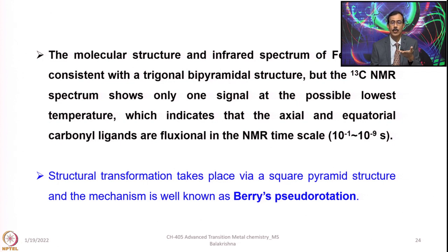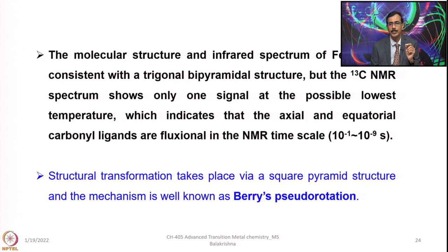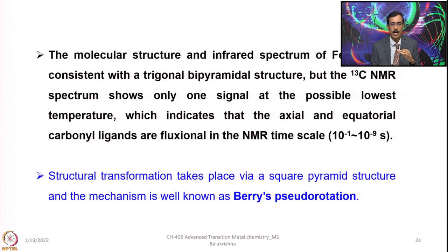In a trigonal bipyramidal complex, we have three carbonyls in the equatorial plane and two in the axial positions. Strictly speaking, the 13C NMR should show two signals — one for equatorial and one for axial — in a ratio of 3:2. However, even at the lowest possible temperature, 13C NMR shows only one signal, indicating a fluxional process in which there is rapid conversion of equatorial into axial and axial into equatorial carbonyls. This structural transformation takes place via a square pyramidal structure in a mechanism known as Berry pseudo-rotation.